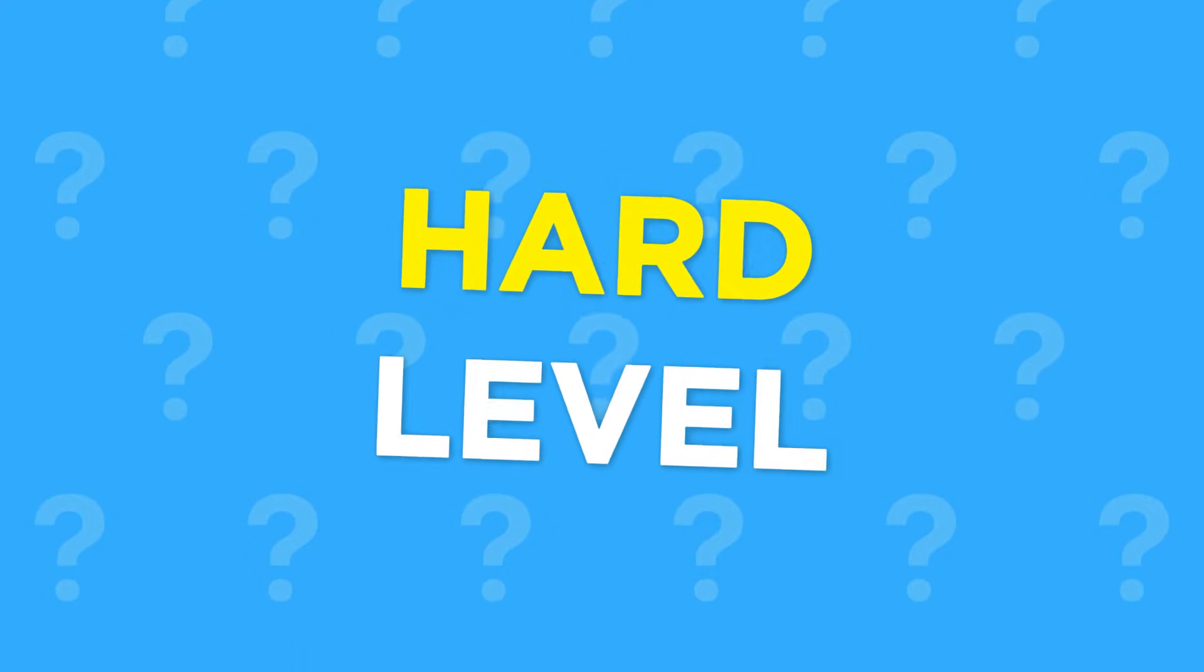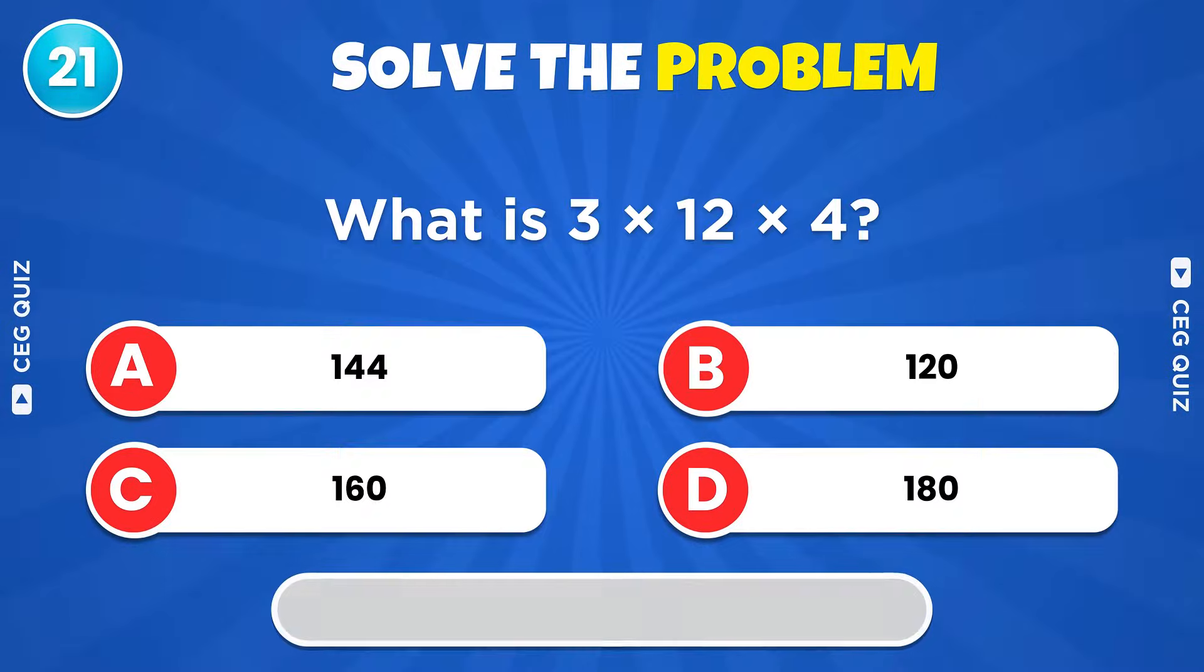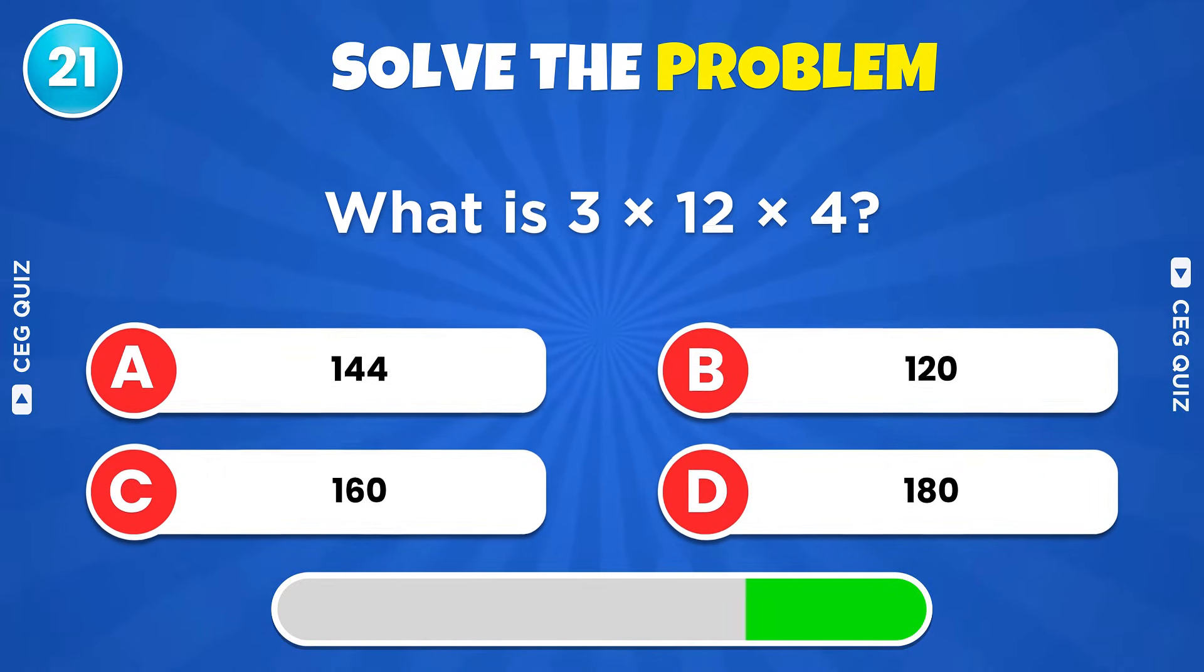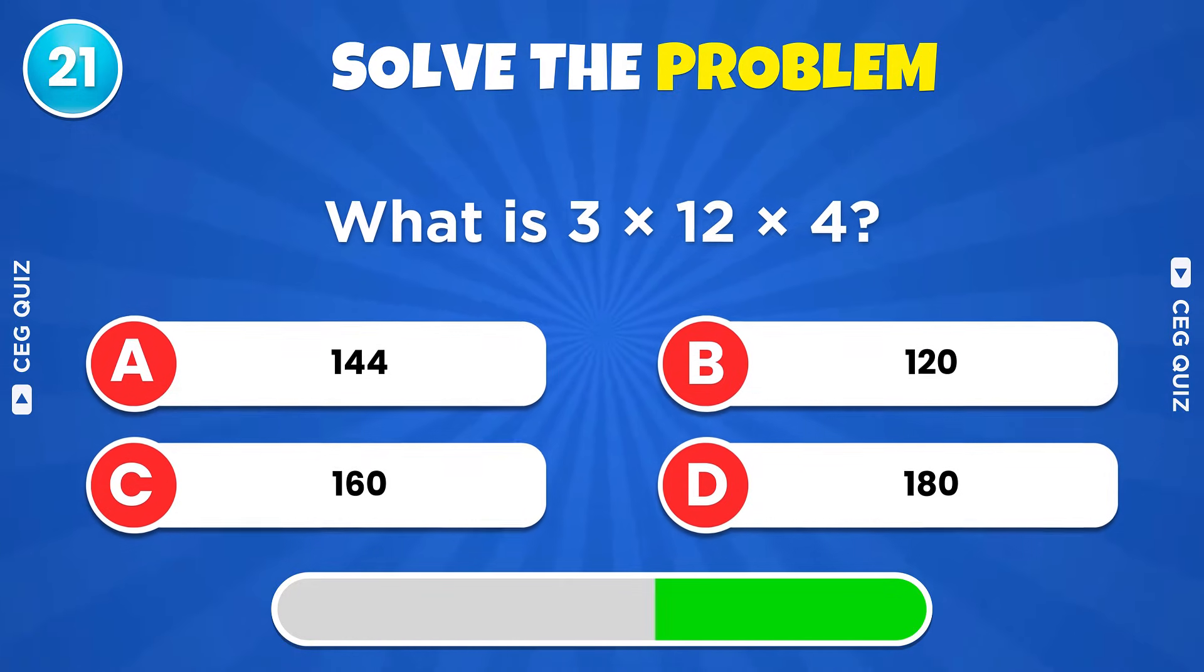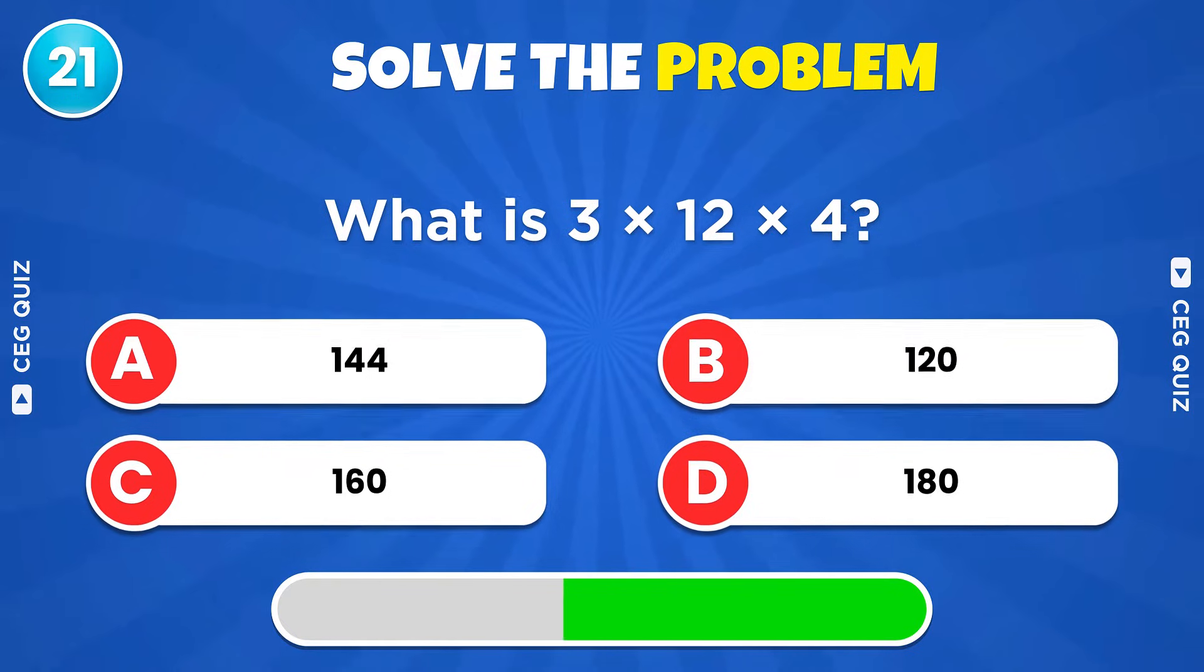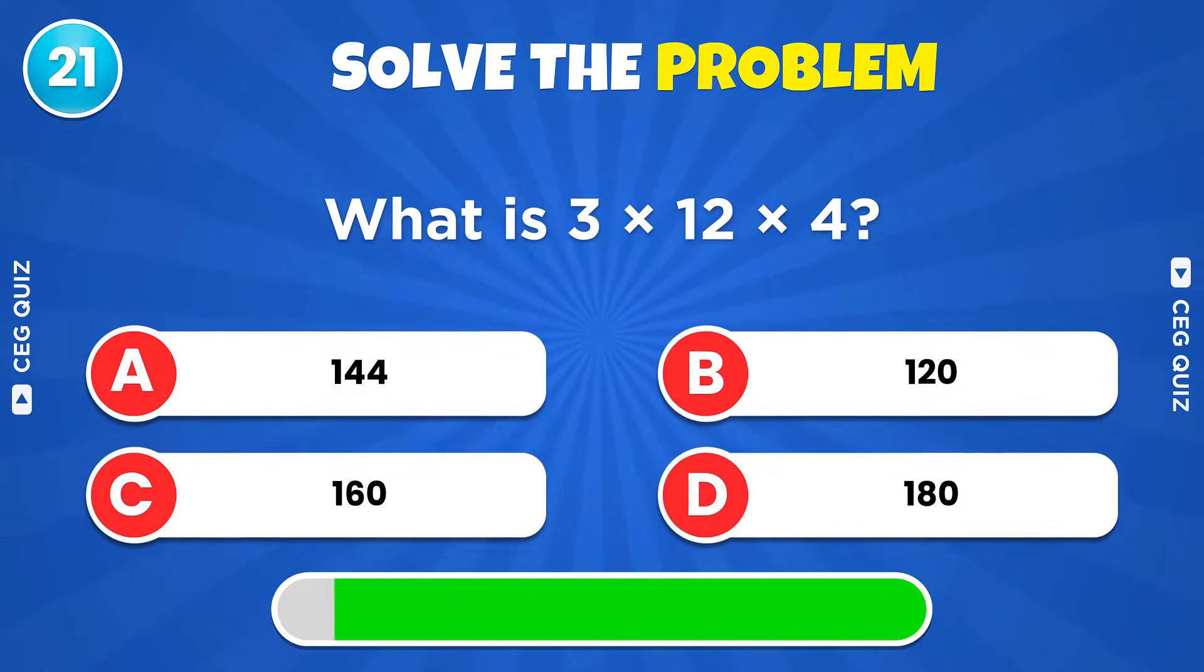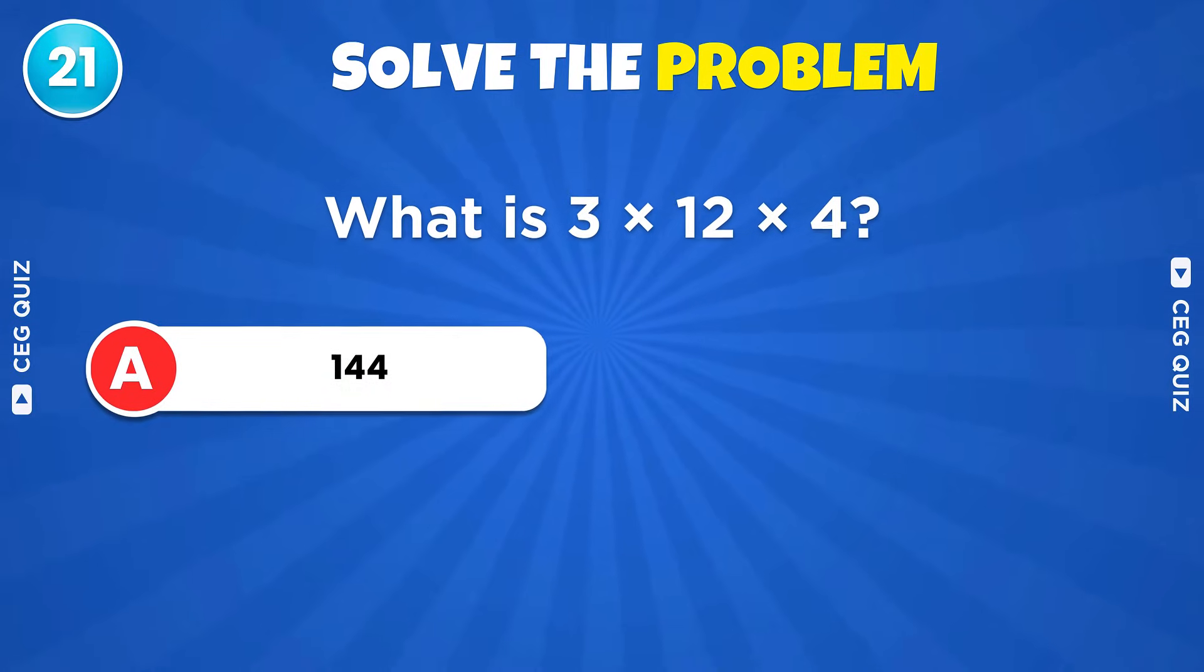Hard level. What is 3 times 12 times 4? The final result is 144.